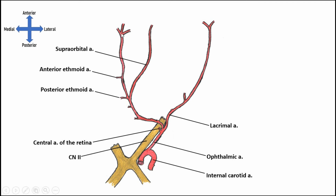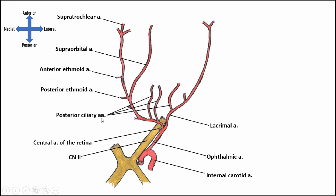Traveling a little further anteriorly, on the medial side we terminate with the supratrochlear artery, as well as branches going toward the medial side of the nose and the medial upper eyelid. Likewise, the lateral eyelid receives a branch from the distal end of the lacrimal artery. In addition, branches go to the eyeball itself as the posterior ciliary arteries. These have short ciliary arteries entering the posterior aspect of the eye, as well as long ciliary arteries running more anteriorly along the outside of the globe, providing blood to the sclera and deeper structures of the eye.